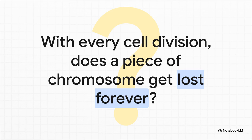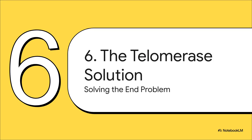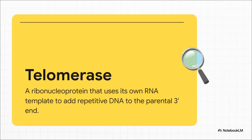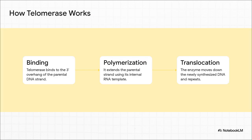Thankfully, the cell has evolved an incredibly elegant, almost magical solution — a specialized enzyme called telomerase. Here's the absolutely brilliant part: telomerase is what we call a ribonucleoprotein. It's part protein, part RNA. And it's a reverse transcriptase, meaning it can make DNA from an RNA template. But it carries its own little RNA template around with it. And it doesn't fill the gap on the new strand; instead, it actually extends the end of the parent template strand, adding repetitive DNA sequences to make it longer. Its mechanism is a beautiful three-step cycle. First, it binds to that 3' overhang on the parental DNA. Second, using its built-in RNA template, it polymerizes a short DNA repeat, making that parental strand a little longer. And third, it translocates — it slides down the new DNA it just made and does it all over again and again, adding hundreds of these protective repeats.